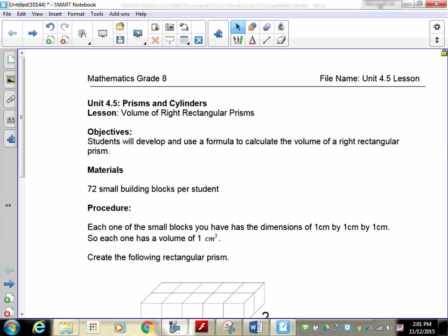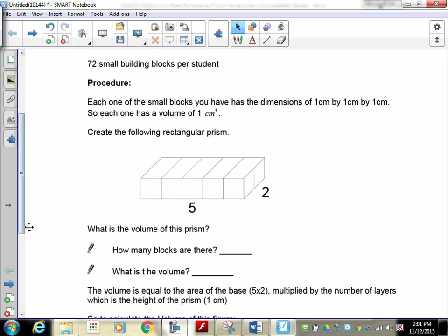We're now going to move away from surface area and into volume. We're going to start with the volume of a right rectangular prism, the box. You should have in front of you 72 little tiny building blocks, little cubes, so we can actually create stuff and go through it.